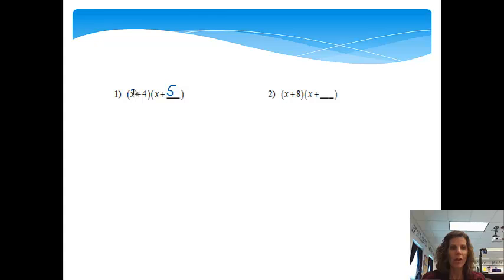The first thing that we want to do is take this x, and we're going to distribute it to both parts. We're just going to pretend like the 4 is not there. So x times x would be x², and then x times 5 is a positive 5x. Now we're going to distribute the 4. So 4 times x would be positive 4x, and 4 times 5 would be positive 20. And then from here, we're just going to combine like terms. I've got x² plus 5x plus 4x is 9x plus 20.